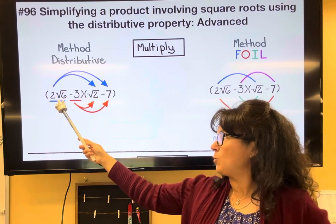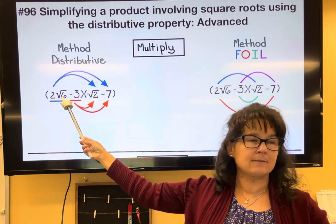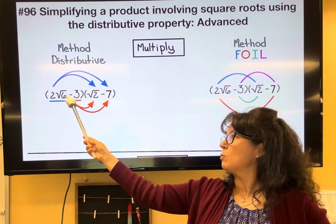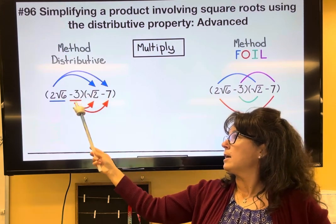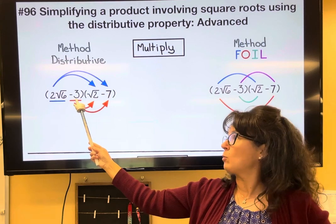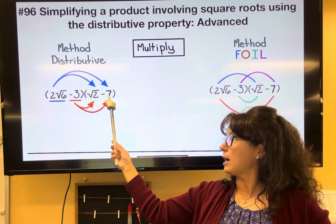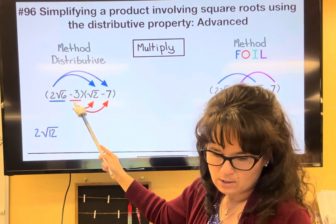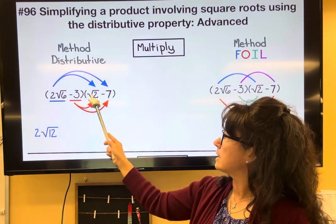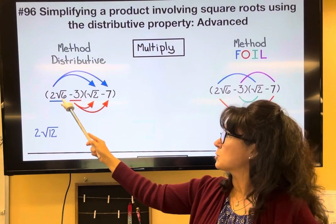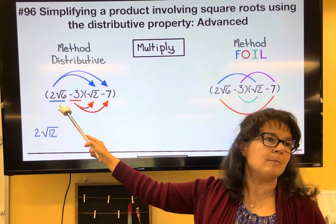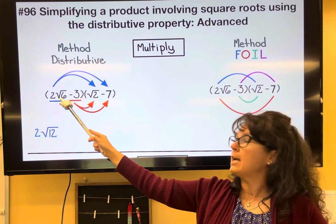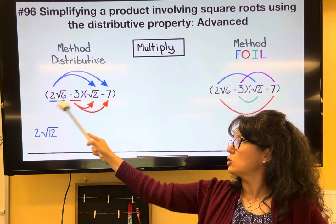If we take (2√6 - 3)(√2 - 7), we distribute the first term. Two root six multiplied by root two gives two, and root six times root two is root 12, because we multiply what's underneath the root. Then two root six times negative seven: positive times negative is negative, and two times seven is 14, giving us 14 root six.